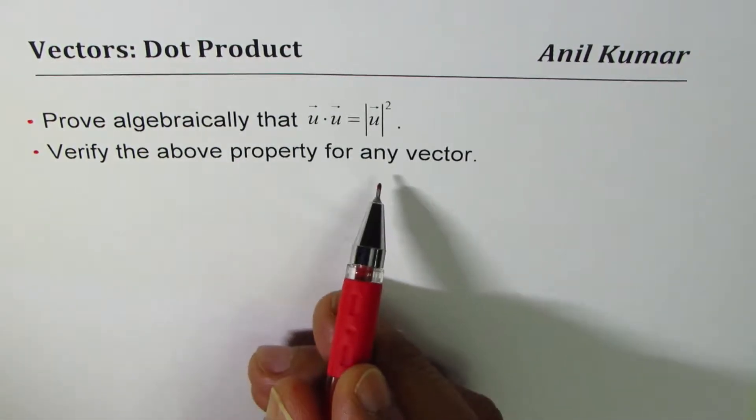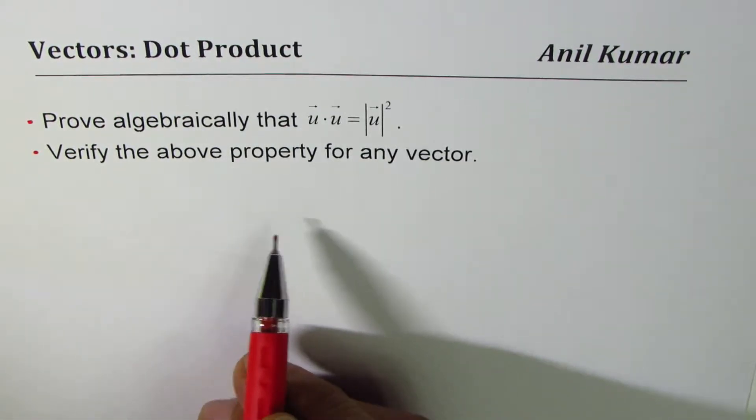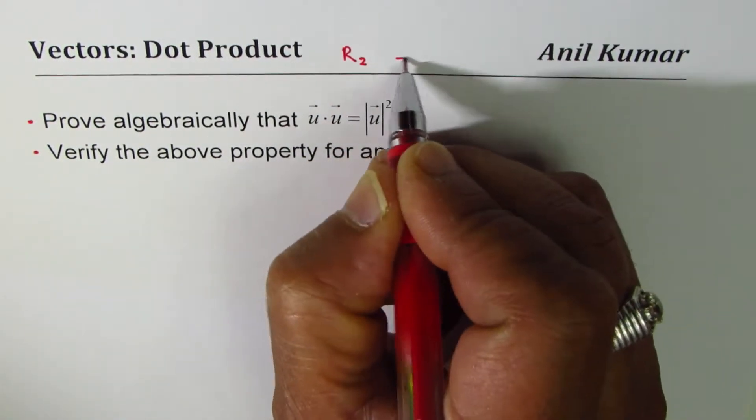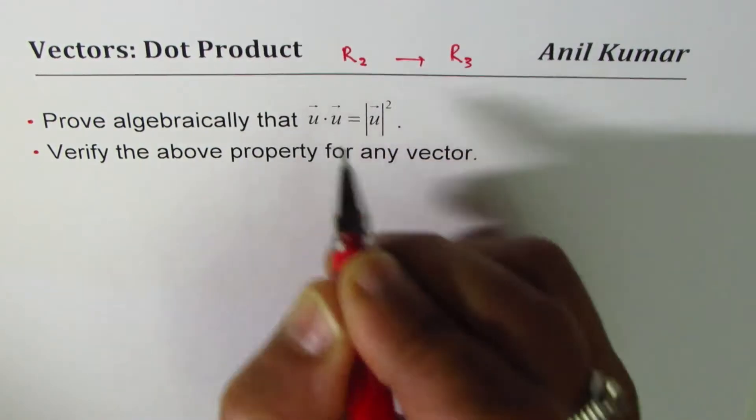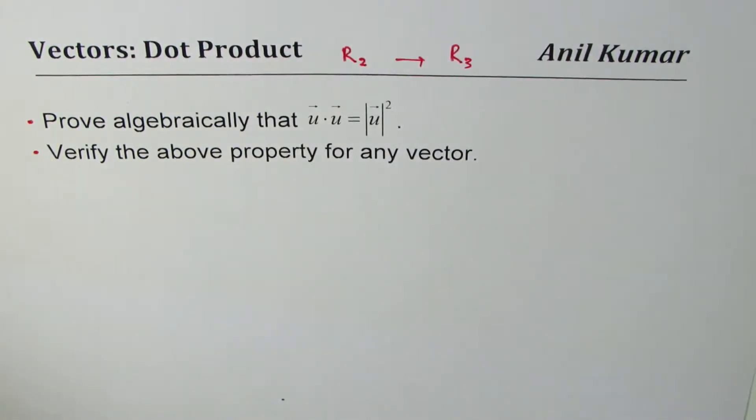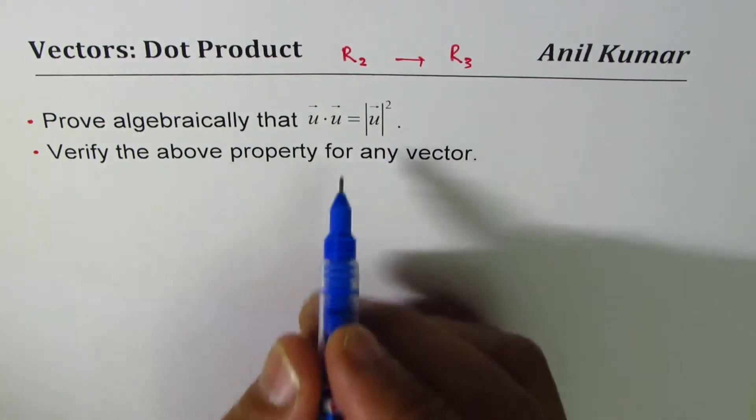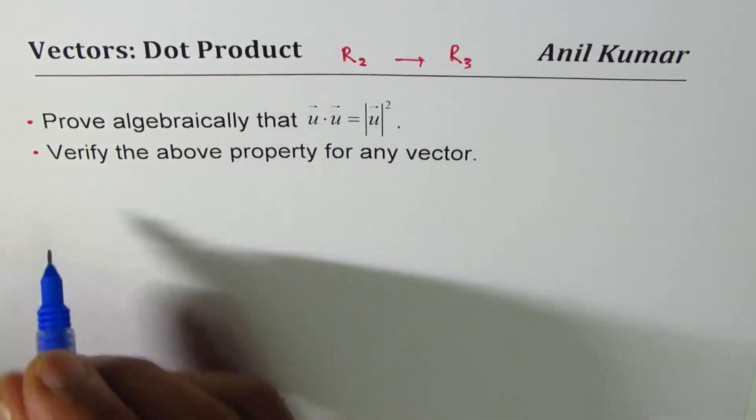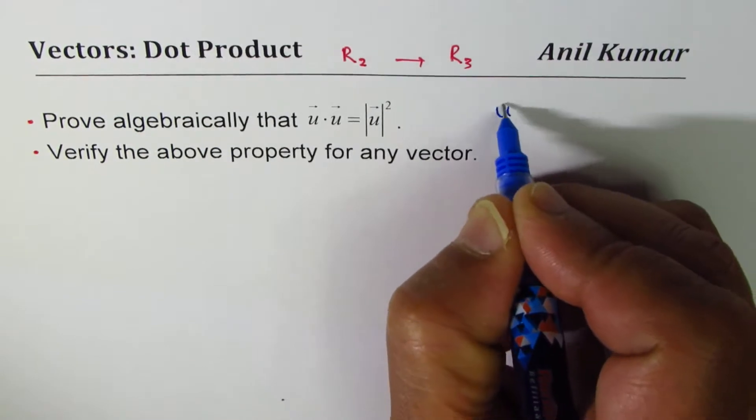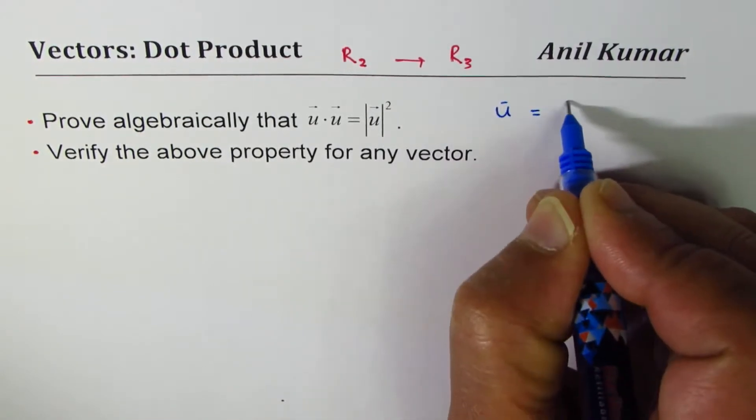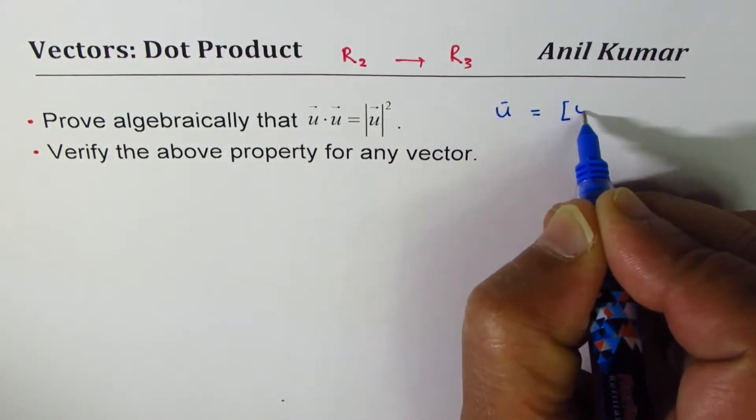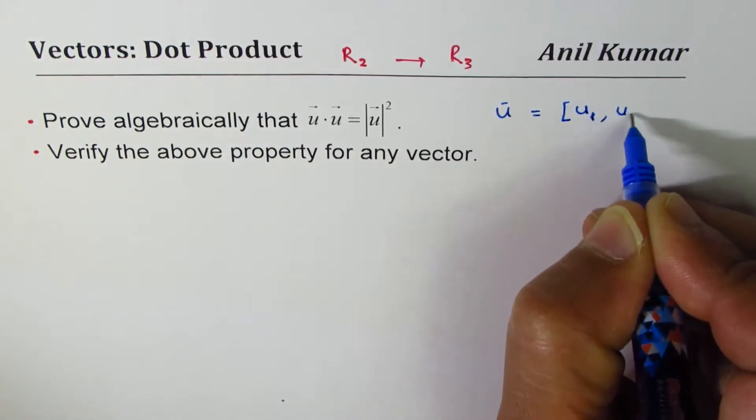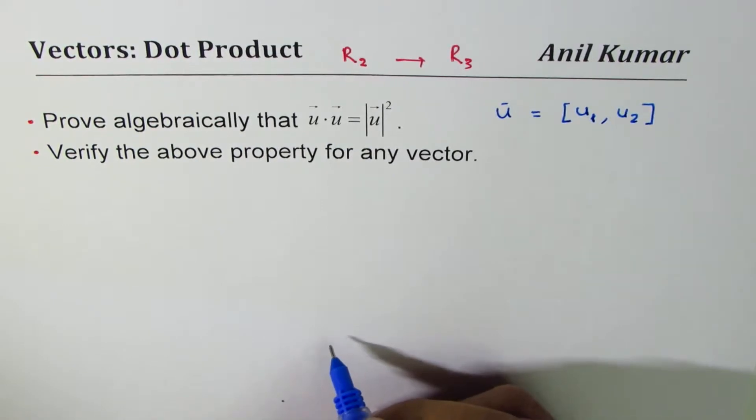I'll do it for R2 and then you can try for R3 following the same strategy. So we are given vector u in R2. I can write vector u with the x component as u1 and the y component as u2. So that becomes the x and y component for my vector.